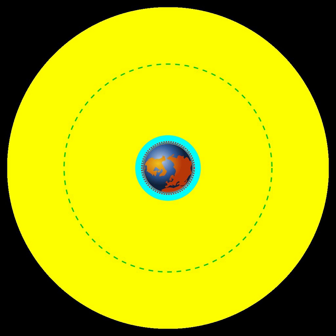Tundra orbit, a synchronous but highly elliptic orbit with significant inclination, typically close to 63.4 degrees, and an orbital period of one sidereal day, 23 hours, 56 minutes for the Earth. Such a satellite spends most of its time over a designated area of the planet.